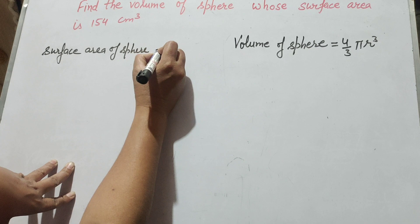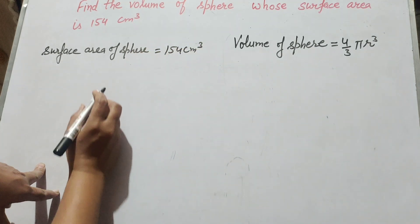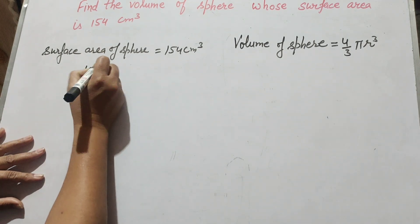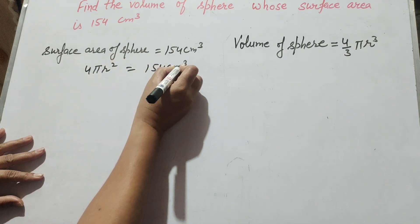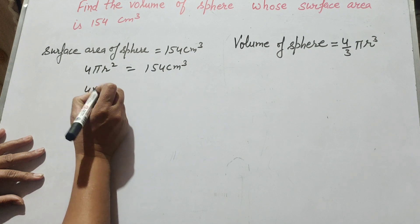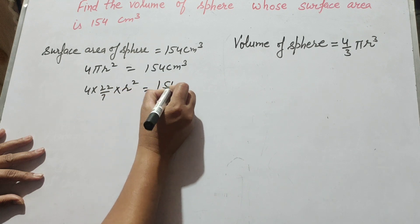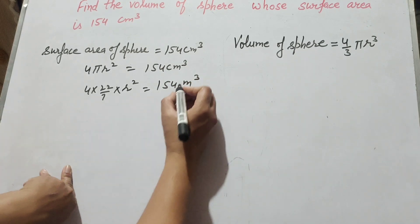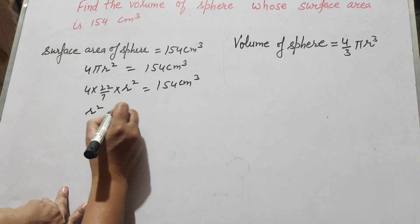The surface area of the sphere is equal to 154 centimeter square. So first we find the radius of the sphere. We know the formula to find the surface area of a sphere: it is 4 pi r square equal to 154. The value of pi is 22 over 7, so 4 times 22 over 7 times r square equals 154.